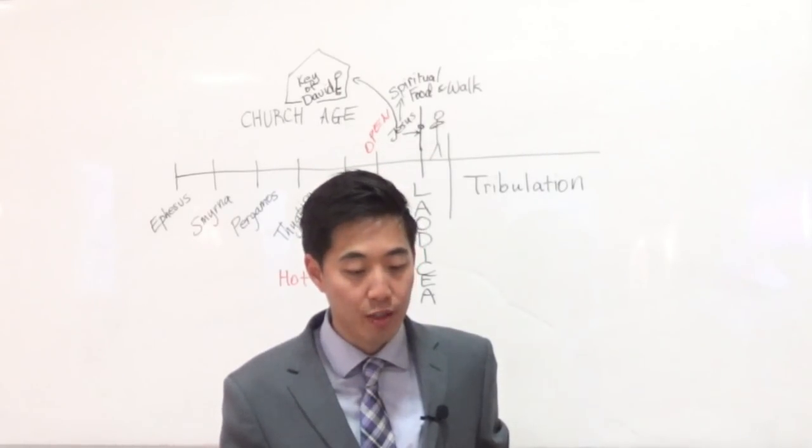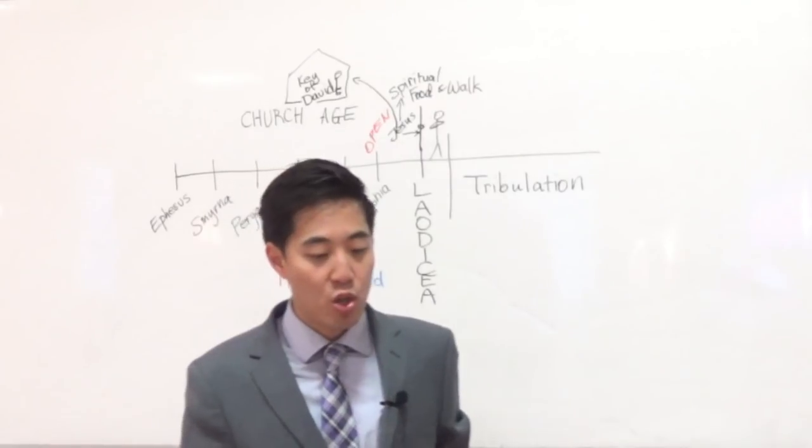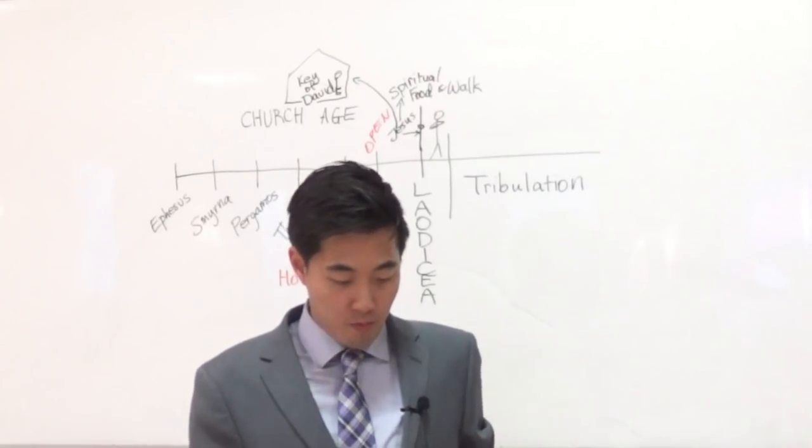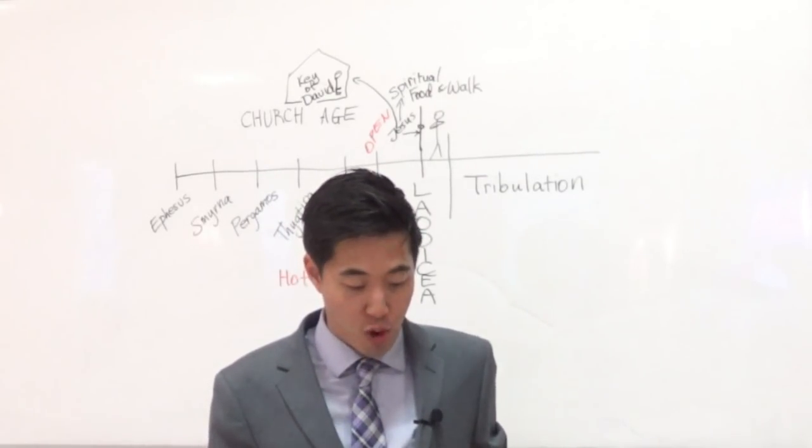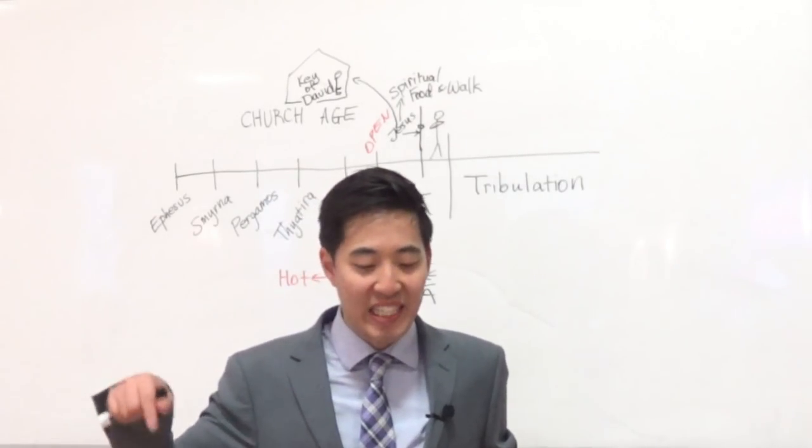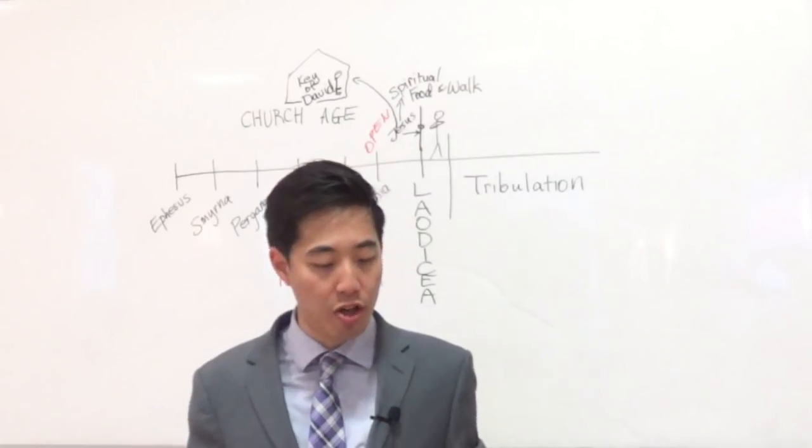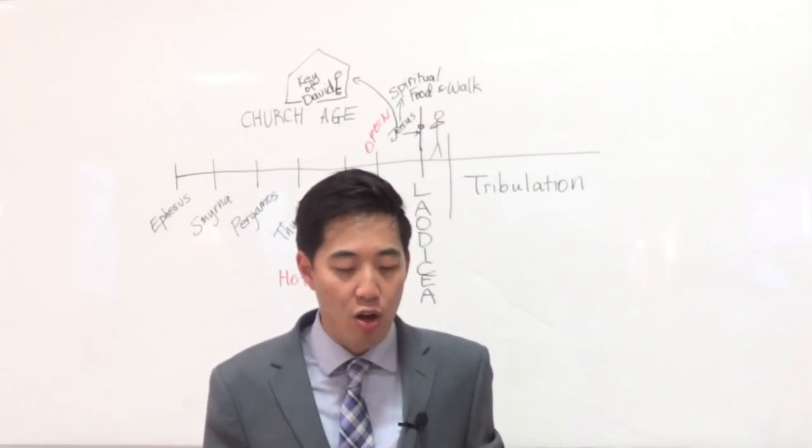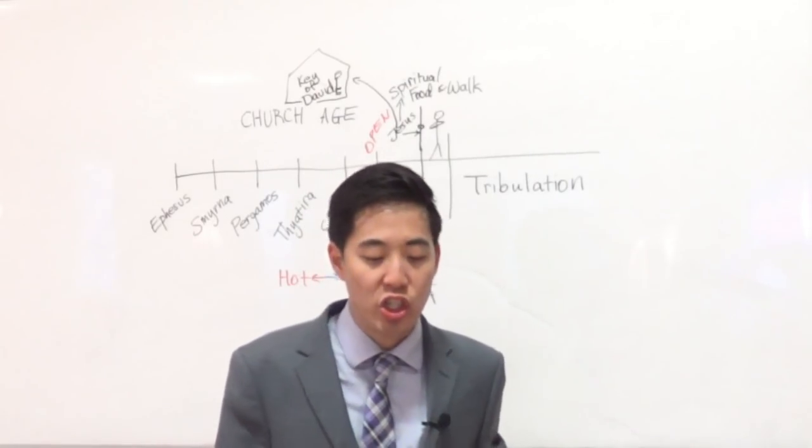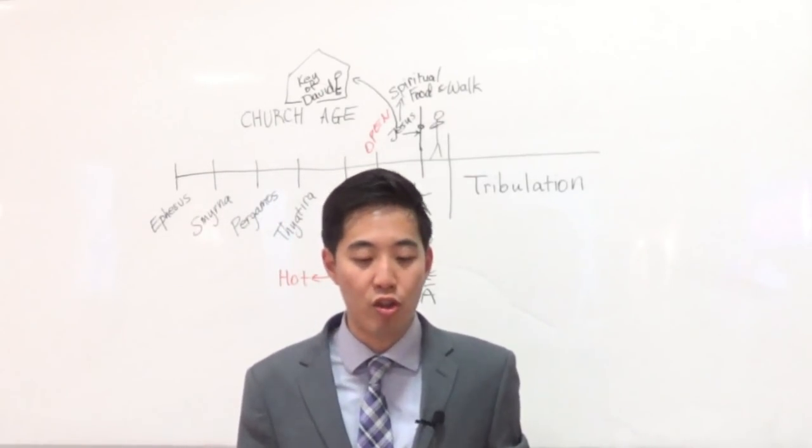Let's look at verse 21. A tribulation phrase again. To him that overcometh. If you overcome, conquer, live your life well, will I grant to sit with me in my throne. Jesus Christ will grant you access to sit with him on his throne. You're going to share his rulership with him. You get a chance to sit on his throne and rule. Even as I also overcame and am set down with my father in his throne. Jesus Christ overcame too. Jesus Christ conquered in his life. That's why he's able to sit on the throne to rule.